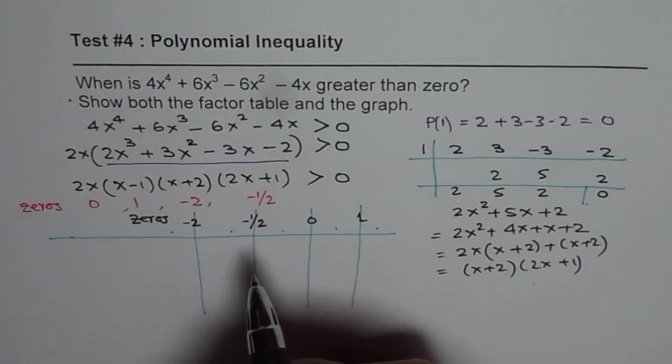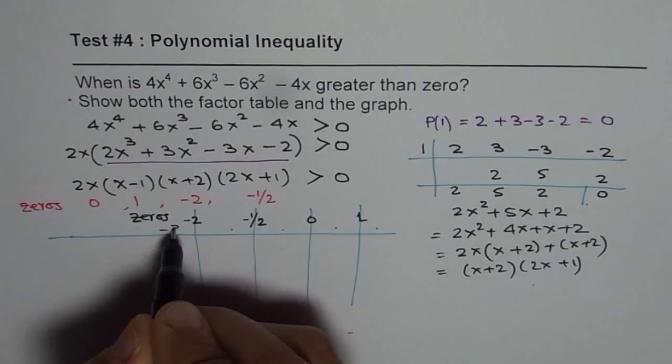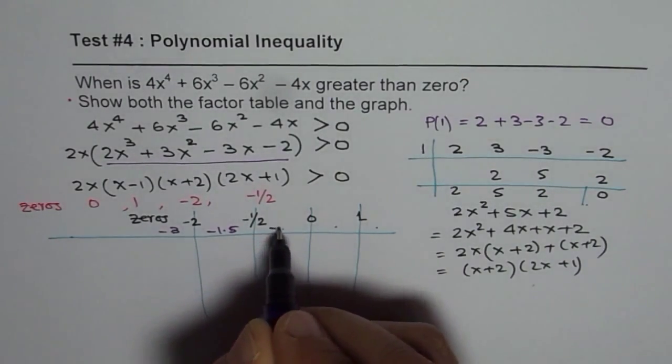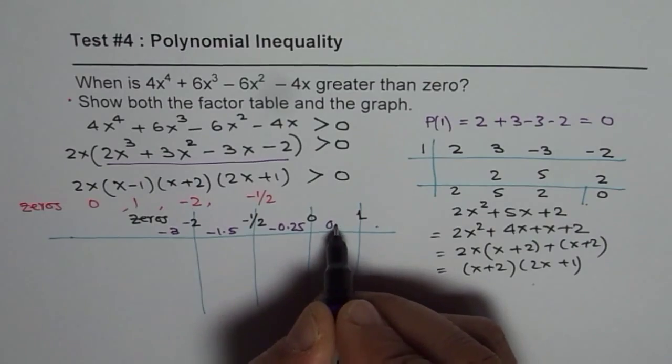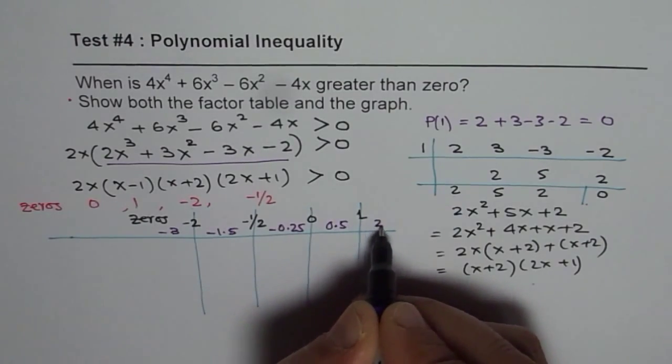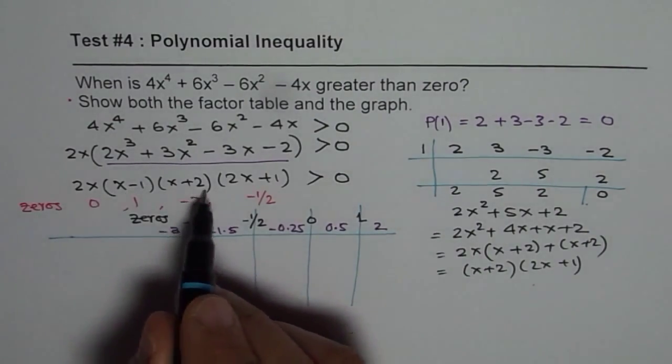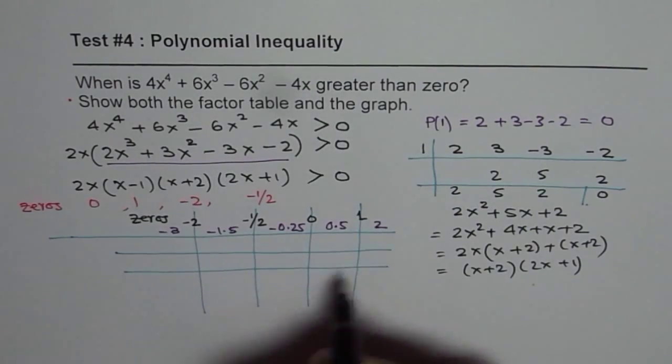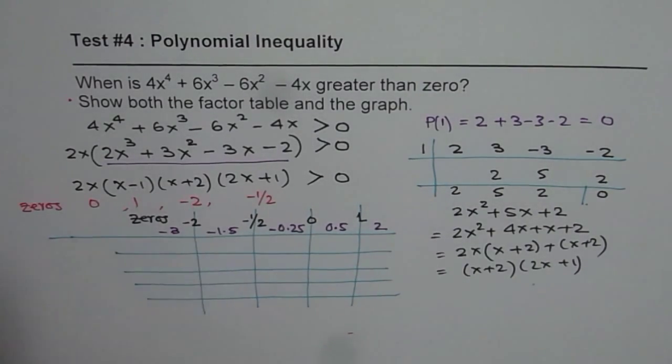So let us take test points in each part. So we can have a test point as minus 3 here and a test point minus 1.5, test point of minus 0.25 since this is half and we can take point of 0.5 here and let us say 2. The factors for us are 4, so we will draw 4 lines here. So let us write these factors one by one.